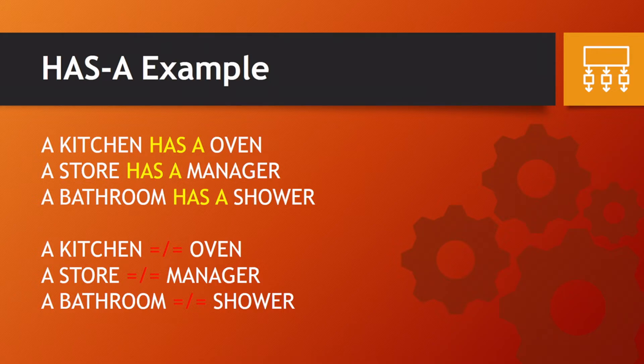To better understand this, here's an example: A kitchen HAS-A oven, a store HAS-A manager, a bathroom HAS-A shower. Therefore, a kitchen is not an oven, and a store is not a manager, and a bathroom is definitely not a shower.